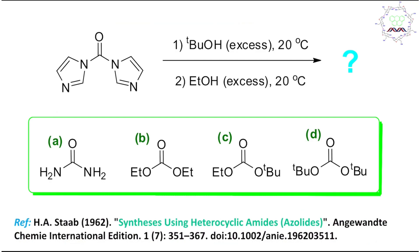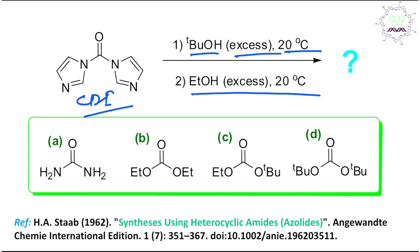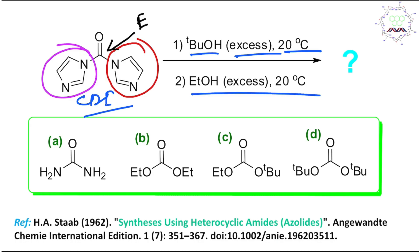Now let's look at the problem carefully. This compound is actually CDI — carbonyl diimidazole. The reaction involves first an excess of n-butyl lithium at 20°C, and second, ethanol at 20°C. Before going into the details, you need to understand the reactivity pattern of this molecule. It can be considered a diamide — a carbonate derivative — with one imidazole on each side. The carbonyl carbon is the electrophilic center, and the alcohol acts as a nucleophile.